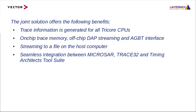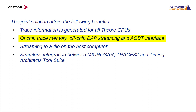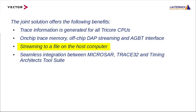The joint solution offers the following benefits. The trace information of interest is generated concurrently for all Tricore CPUs of the RX processor. Trace information can be stored in the on-chip trace memory or exported off-chip via DAP streaming or the AGBT interface. If DAP streaming or the AGBT interface is used, trace information can be streamed to a file on the host computer, enabling long measuring times.